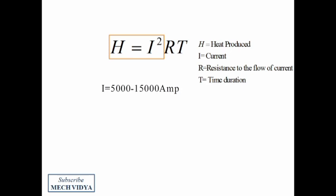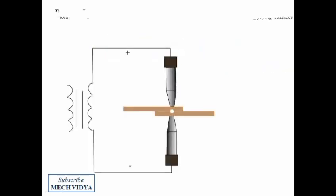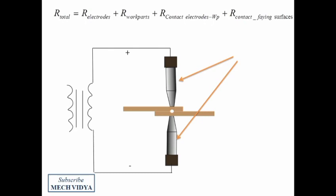Next, the heat transfer is also a function of resistance. The total resistance in this type of welding is the summation of a number of resistances: first, the resistance produced in the electrodes, then in the work pieces, then in the contact region between the electrode and the work piece.